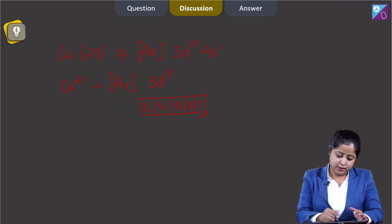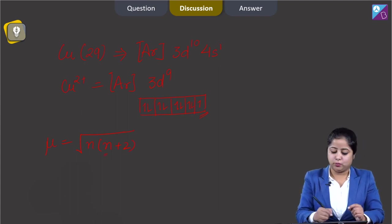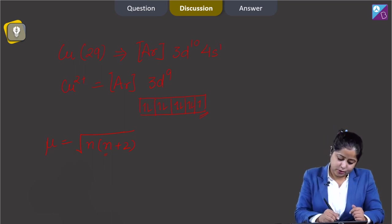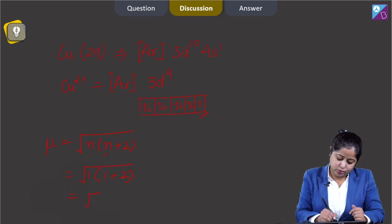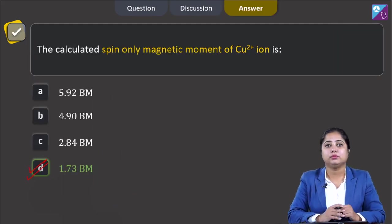Now we calculate the magnetic moment using the formula: μ = √(n(n+2)), where n is the number of unpaired electrons. Here n = 1, so μ = √(1×3) = √3 = 1.73 BM. The correct answer is option number D.